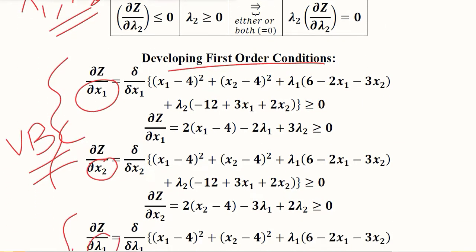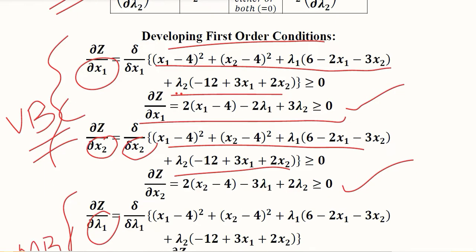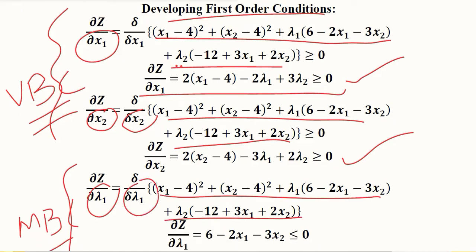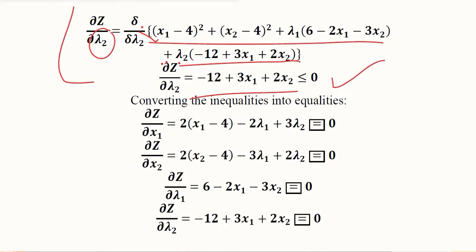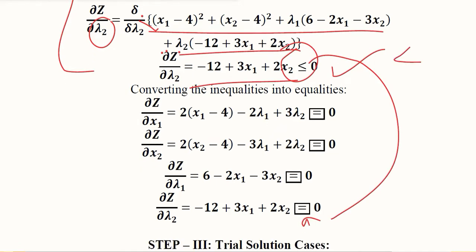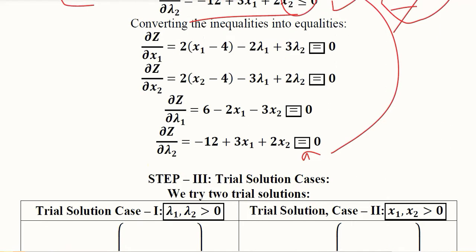The first-order conditions are developed by differentiating. Simple algebra and calculus allow us to take the derivative with respect to x1 to get the first condition, and with respect to x2 for the second. Differentiating with respect to lambda 1 and lambda 2 gives the third and fourth conditions. These four conditions are in inequality form, and we convert them to equalities by setting them equal to zero.